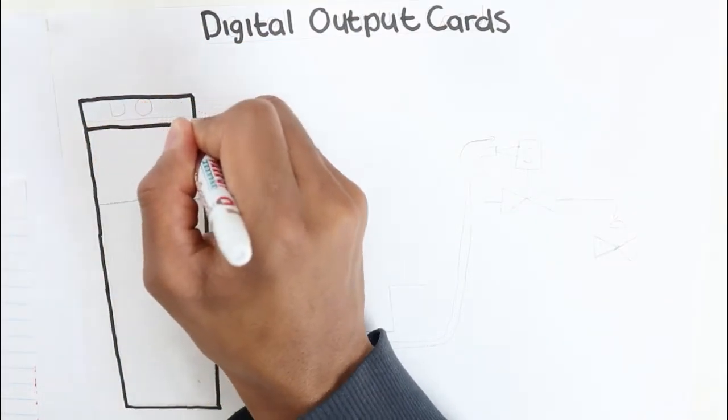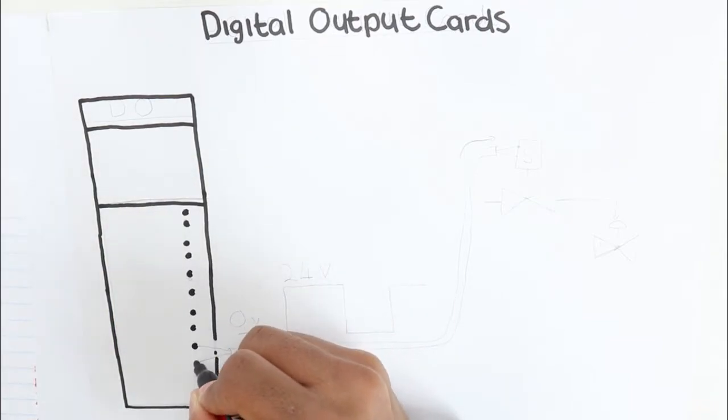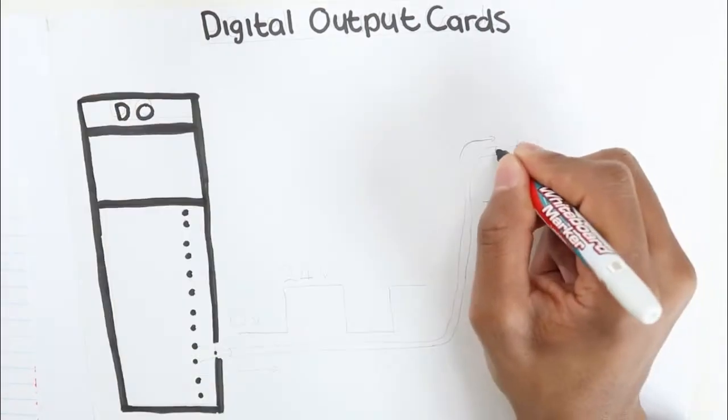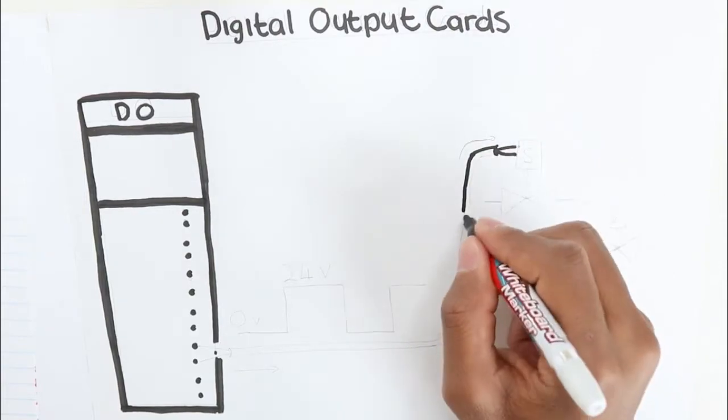Similar to the digital input card, a digital output card only writes on or off signals to the field devices.